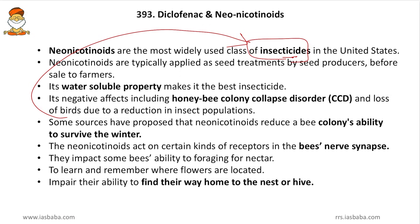Neonicotinoids act on certain receptors in the bees' nervous synapses — the chemicals that transfer signals from one nerve cell to another. When these are damaged, the nervous system is harmed and some bees lose their ability to forage for nectar. Their navigation ability is impaired — they forget where to find nectar and cannot find their way back to their hives. This is how honeybee colony collapse disorder occurs.